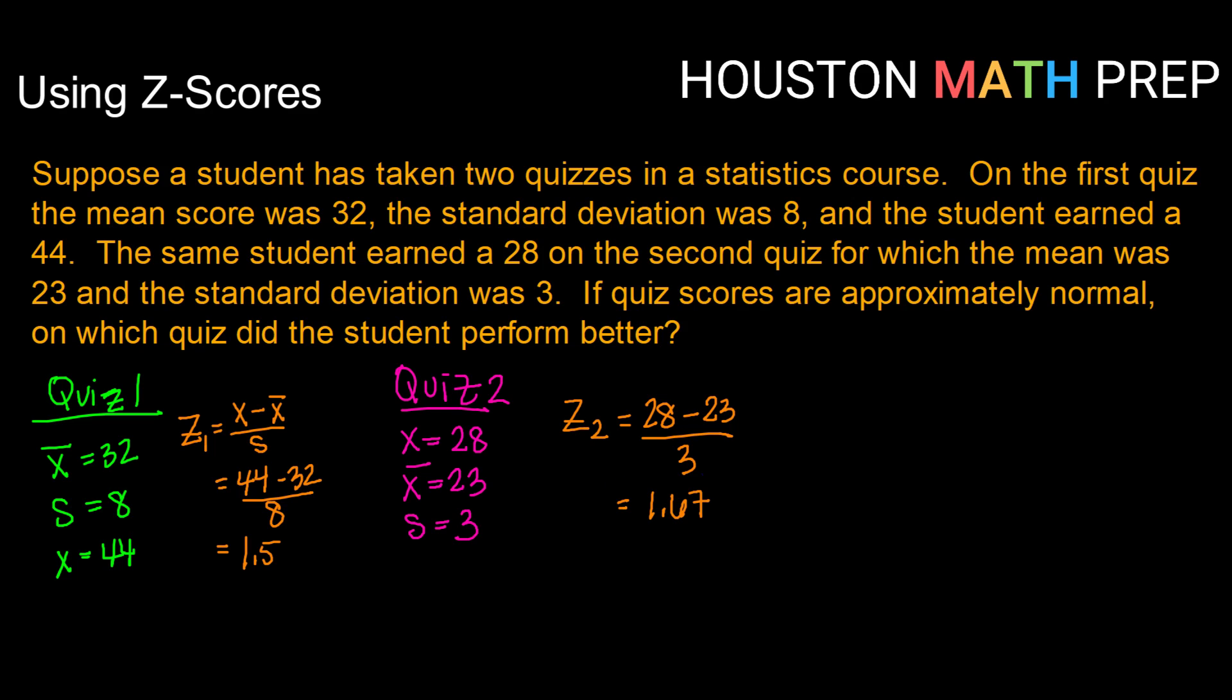Comparing these two values, it looks like relative to the rest of the class, the student did better on quiz two because we have a higher z-score.